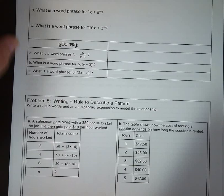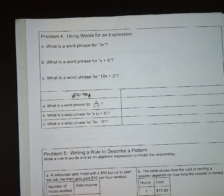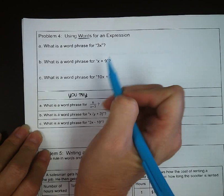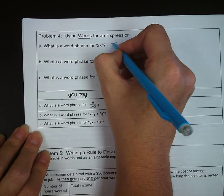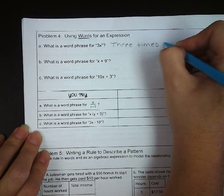Next up, we have problem four, using words for an expression. So we're going to take the numeric and go the other way and bring it back into words. So what is a word phrase for what you see there of three x? And there are a variety of ways you could say it. The example is three times the number x. You could say something like the product of three and x.